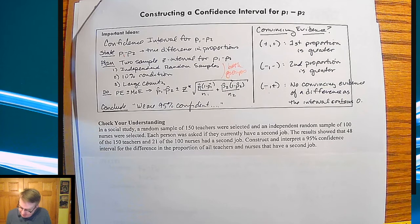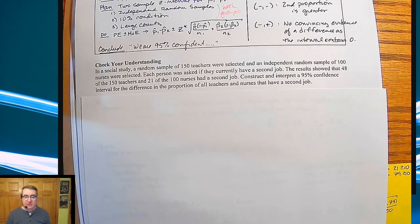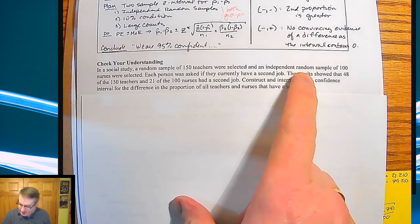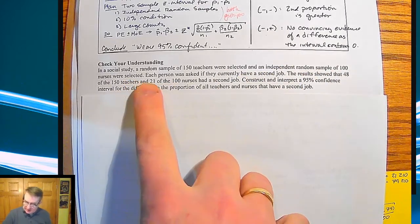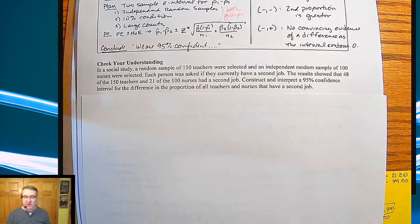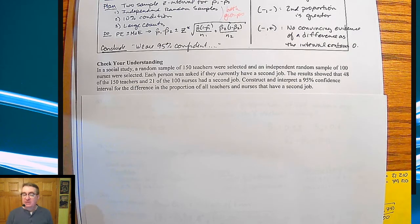All right. So here's the example. In a social study, a random sample of 150 teachers were selected and an independent random sample of 100 nurses were selected. Each person was asked if they currently have a second job. The results showed that 48 out of the 150 teachers and 21 out of the 100 nurses had a second job.